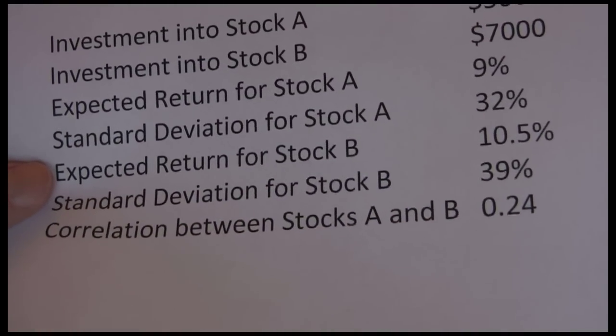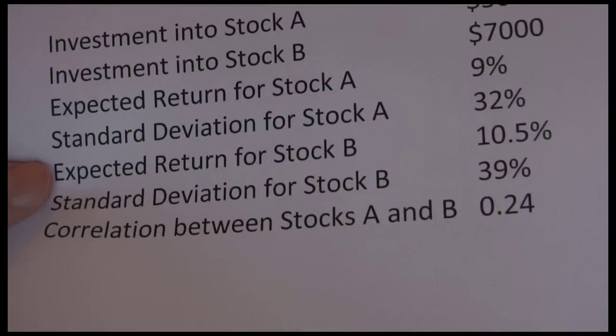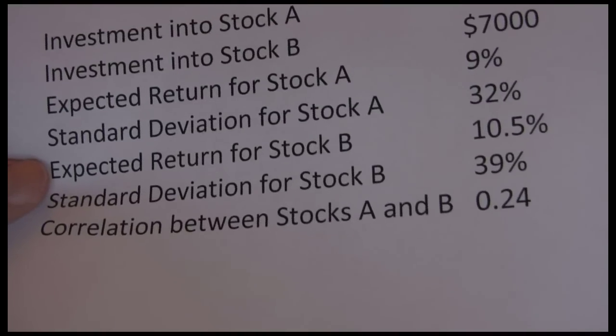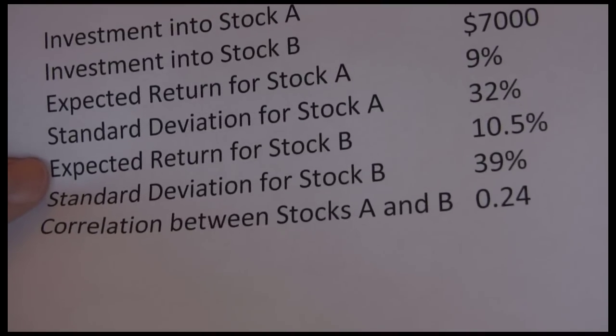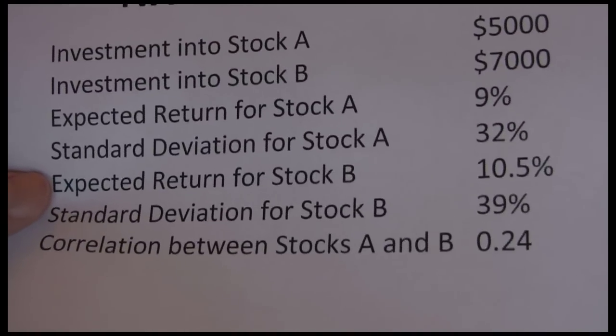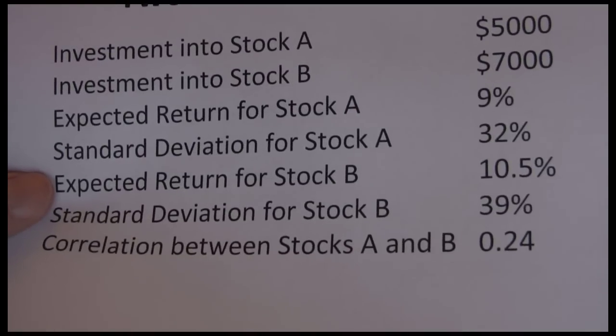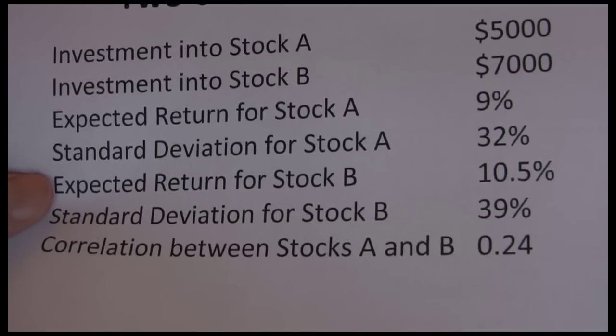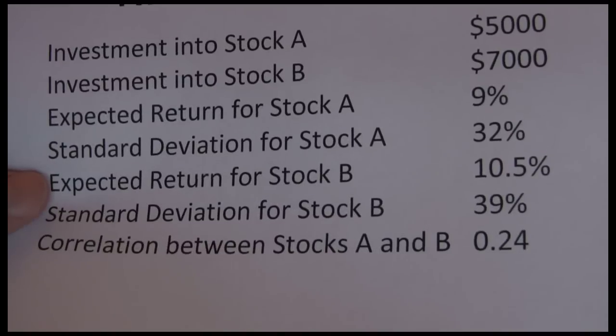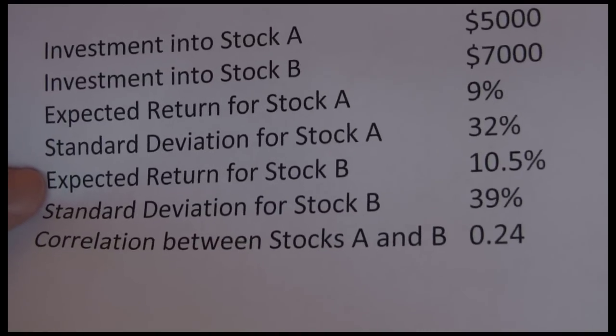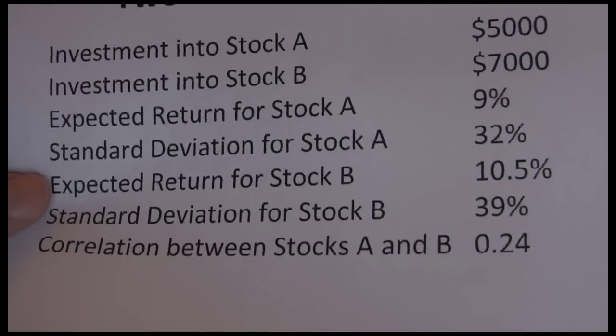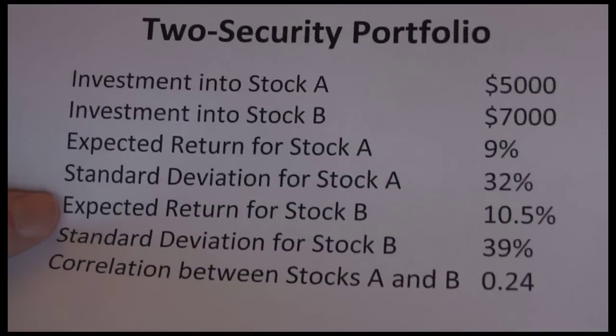Correlation measures how closely the returns for two stocks move together. Correlation will range between negative one and positive one. Here, a positive 0.24 means there's a weak tendency for these stocks to move together. More often than not, they'll move in the same direction, but it's not a reliable relationship. If you think about maybe over a 20-day period, probably 12 out of those 20 days they would tend to move in the same direction, and maybe eight of those days they might move in opposite directions. So there's a weak positive correlation between these two stocks.